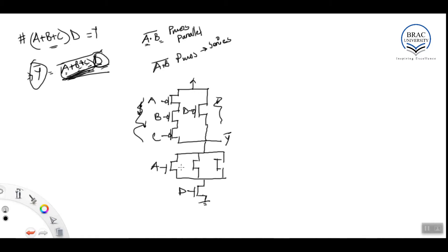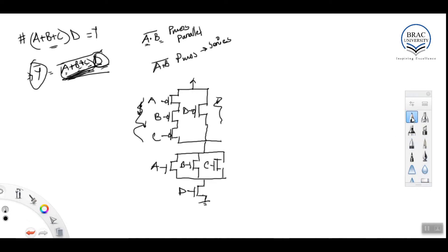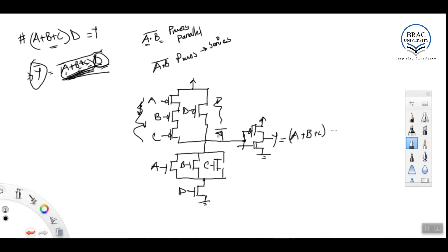So we have d, then a, b, and c in parallel for NMOS — this gives us y-bar. If we want y, we need to invert this output point. We can design a basic CMOS inverter: vdd at top, ground at bottom, input connected, output gives y. So this complete connection gives y = (a + b + c) · d.